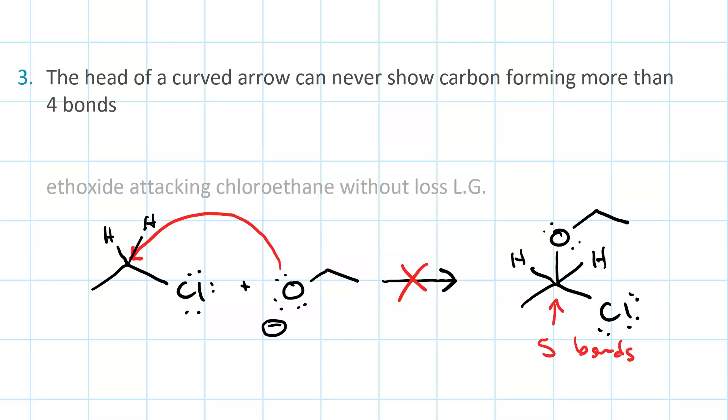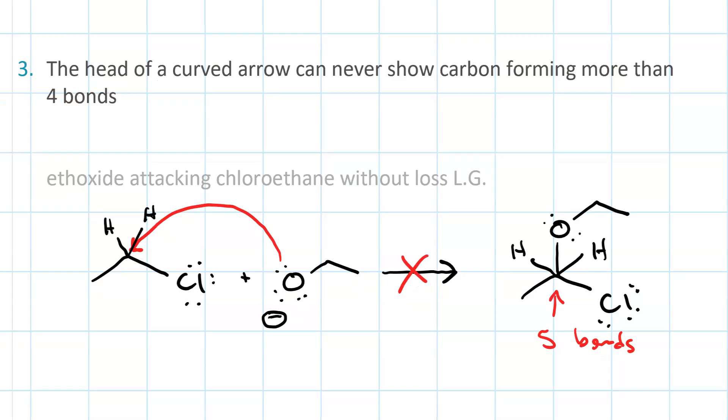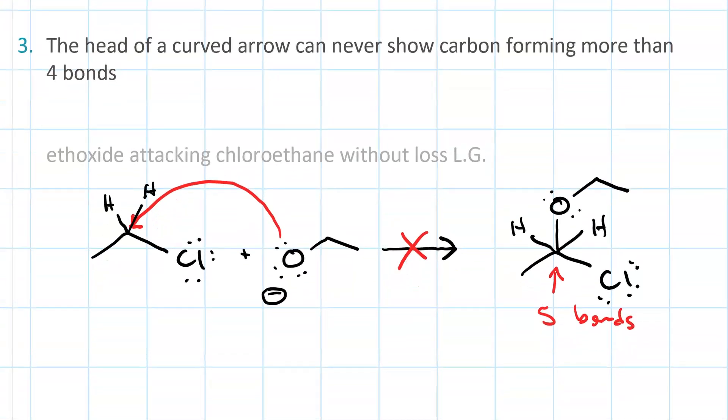However, if we combine this with loss of a leaving group, then we're fine. The loss of a leaving group here breaks that fifth bond and lets us form diethyl ether and a chloride ion.